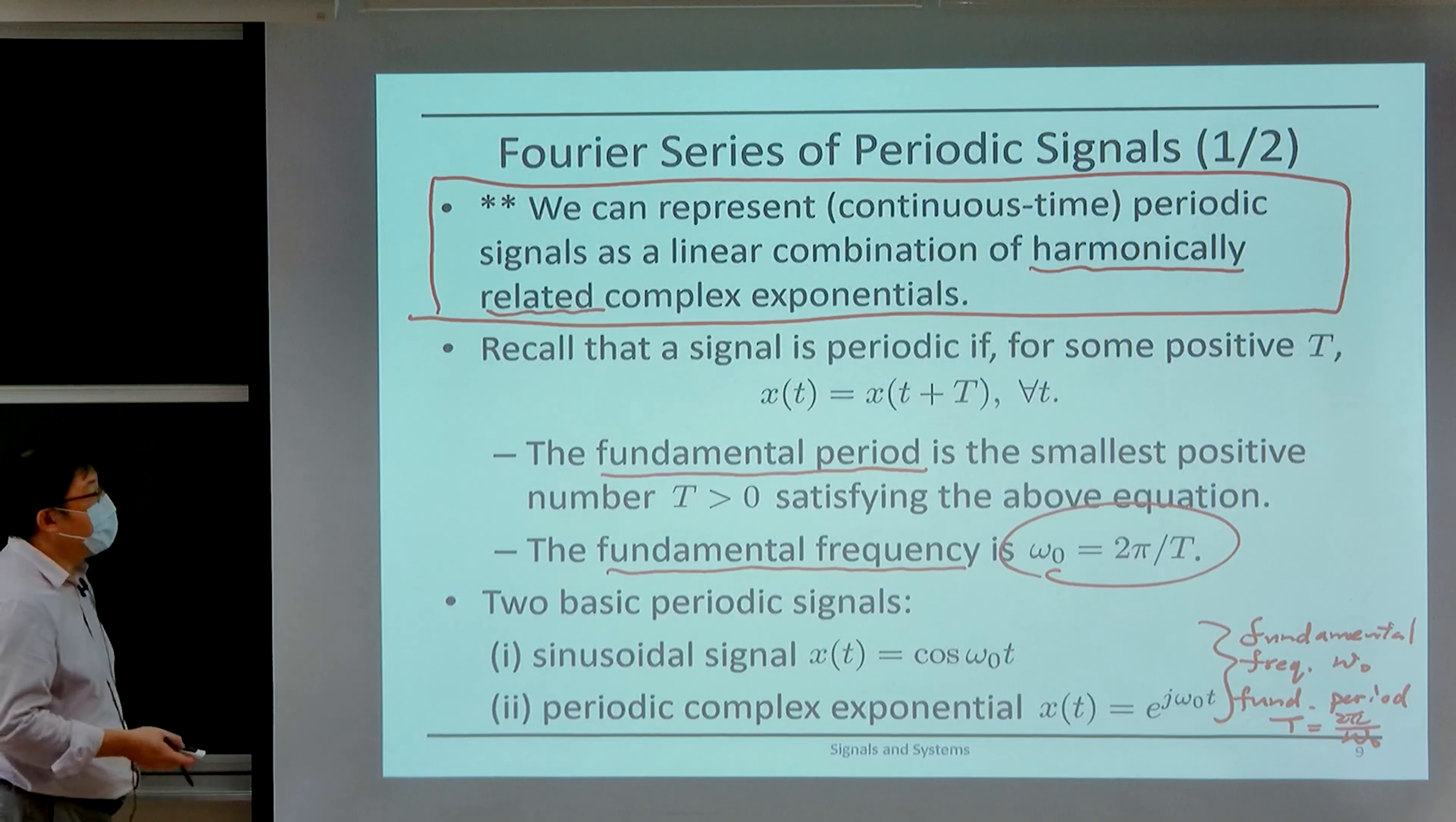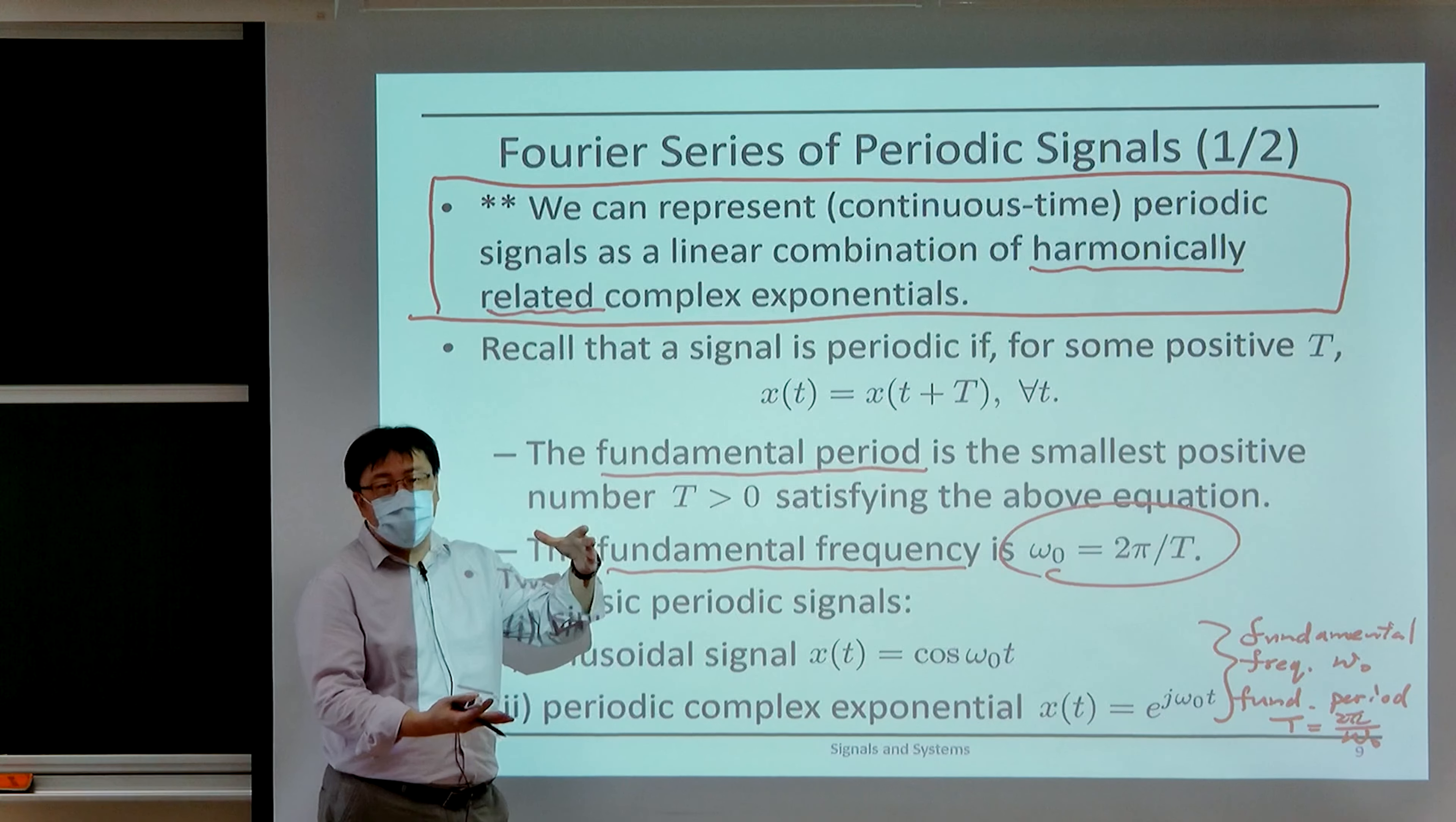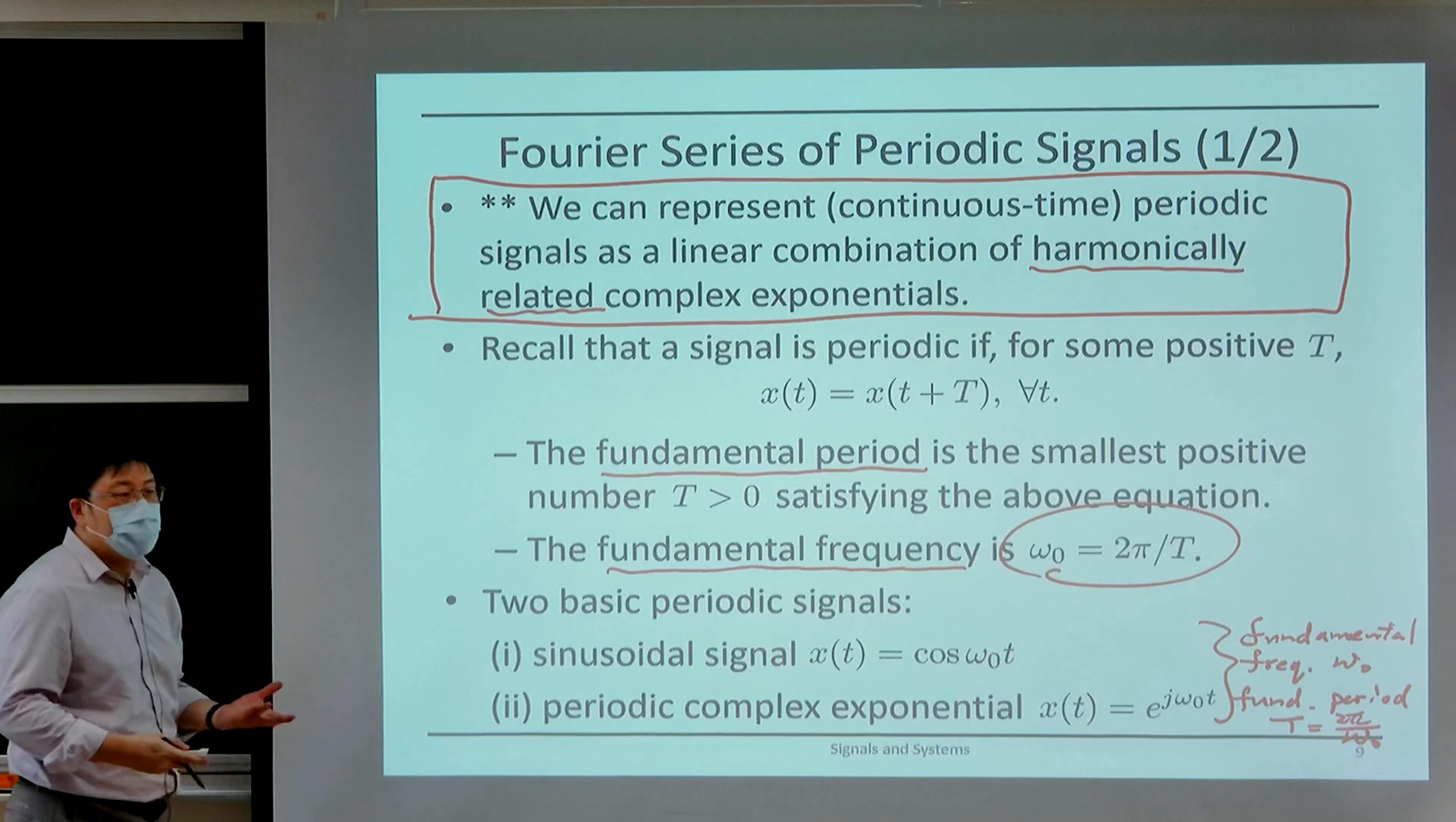This is quite intuitive because suppose that x(t) is a periodic signal, meaning that x(t) equals x(t + T) for all t. Then if you can write x(t) as a superposition of complex exponentials, it's not hard to imagine that these complex exponentials should also have the same period T. It's difficult to compose a signal with period T using something that is not of period T.